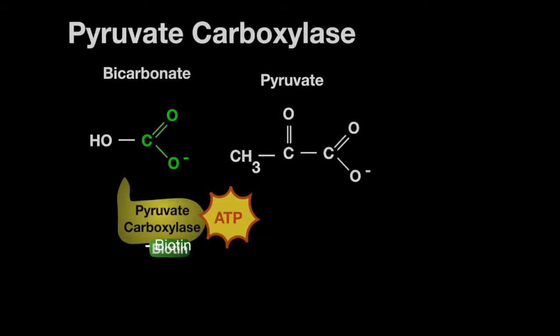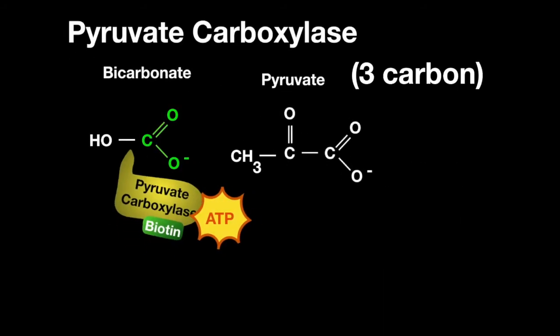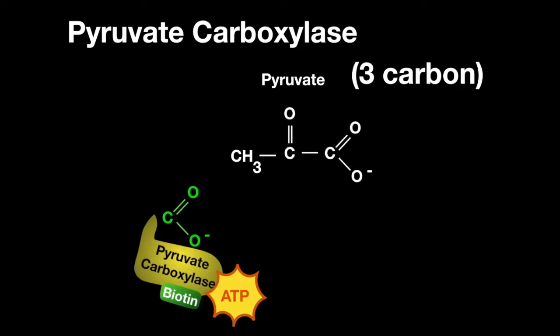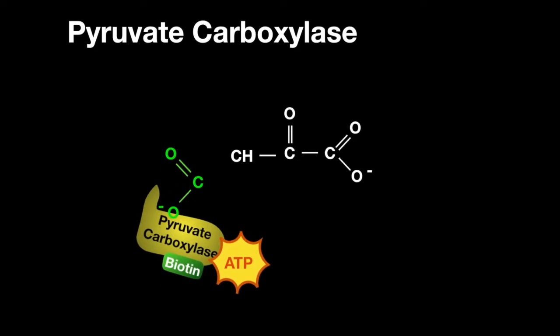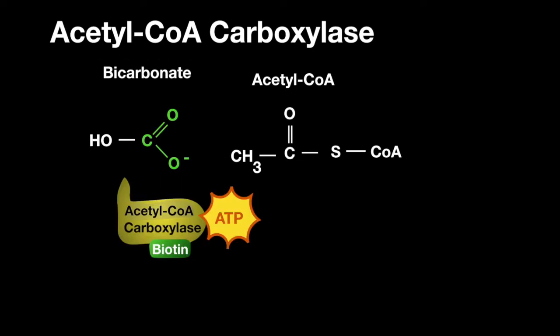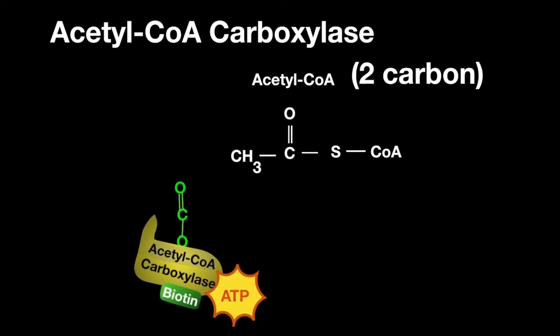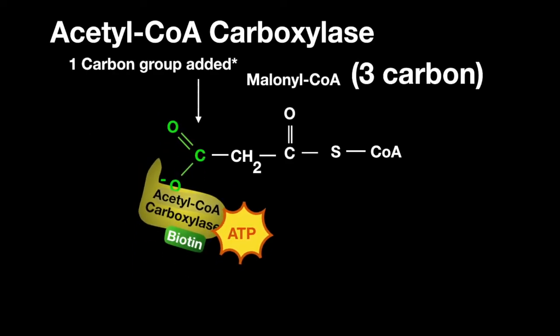These enzymes include pyruvate carboxylase, which turns a three-carbon pyruvate into a four-carbon oxaloacetate, and acetyl-CoA carboxylase, making two-carbon acetyl-CoA into three-carbon malonyl-CoA.